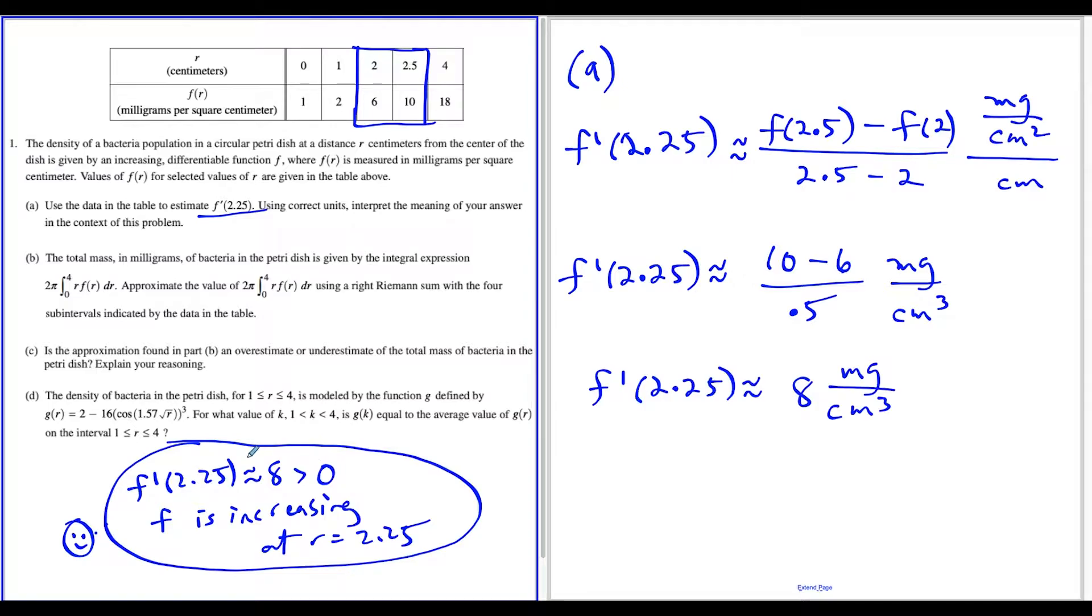Now you just have to fill in the blanks and think about what this function stands for. They told us f of r represents the density of the bacteria population, where r is centimeters from the center of the dish. So this tells us the density of the bacteria is increasing when we are 2.25 centimeters away from the center.